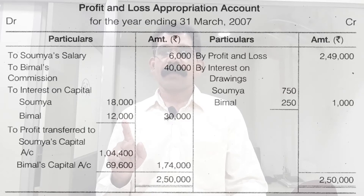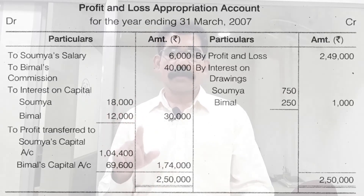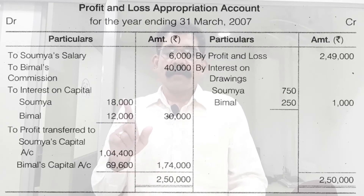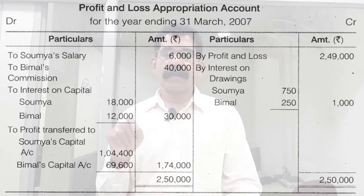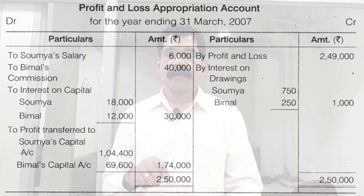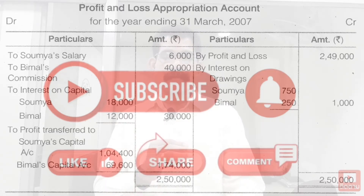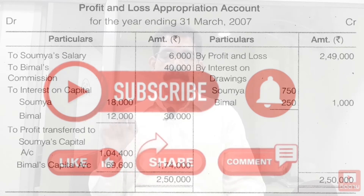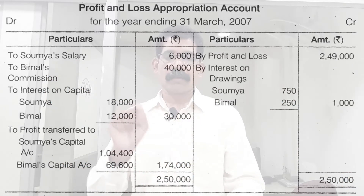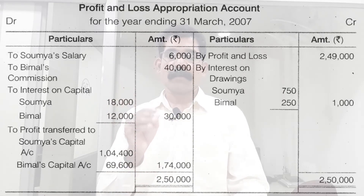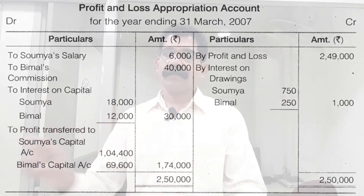Both partners are entitled to get 6% interest on their capital. Soumya's opening capital is 3 lakhs — 3 lakhs × 6% = Rs. 18,000. Bimel's capital is 2 lakhs — 2 lakhs × 6% = Rs. 12,000. So debit interest on capital: inner column Soumya 18,000, Bimel 12,000, totalling Rs. 30,000 on the outer column.